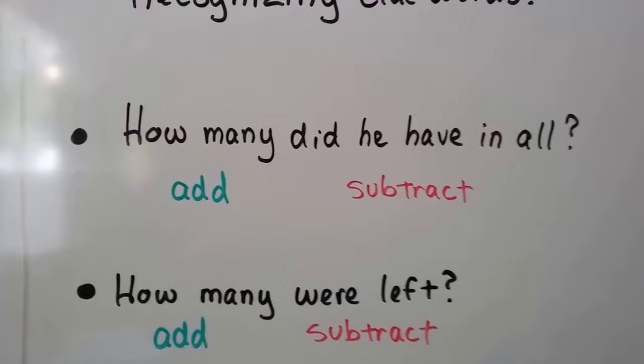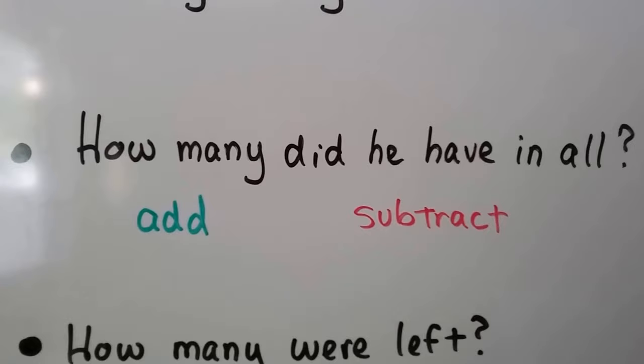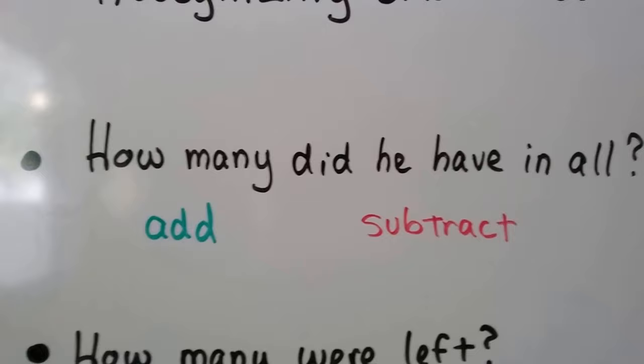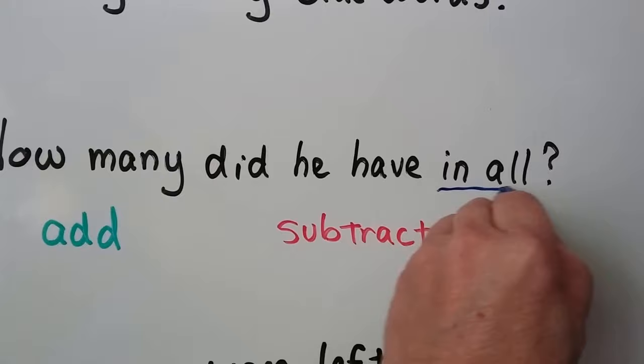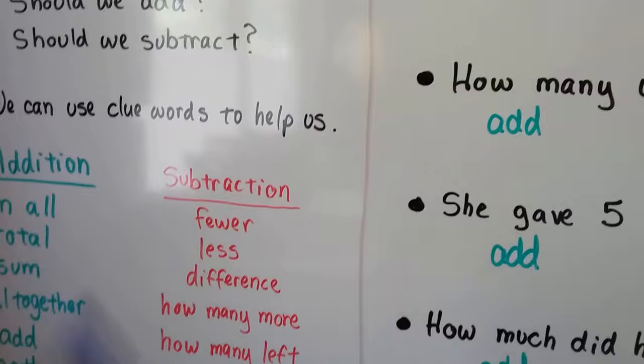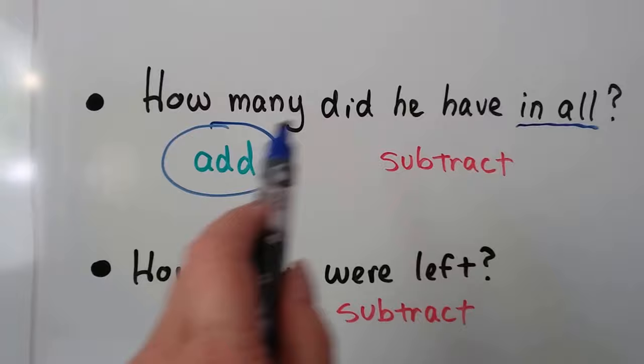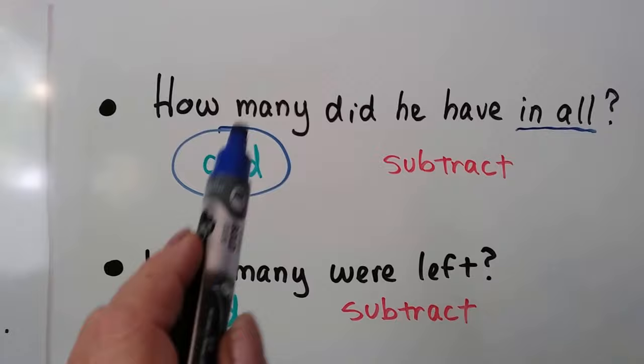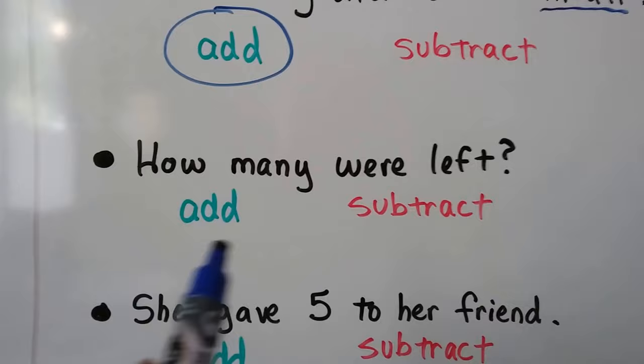It's important that we learn how to recognize clue words. Look at this one: if the word problem says at the end, 'how many did he have in all?' — do you think we would add or subtract? We look for the clue words. The clue words here are 'in all.' We can look on our addition list and see that 'in all' is an addition clue word, so that means we're going to add.